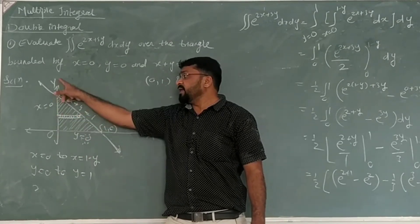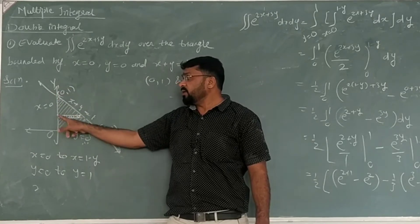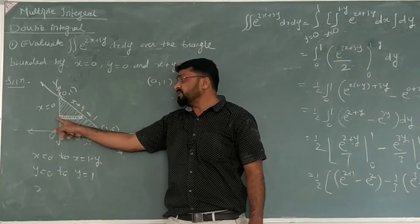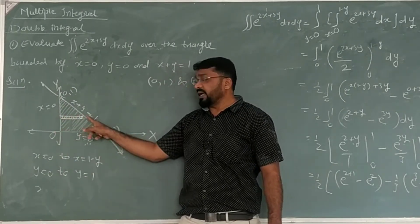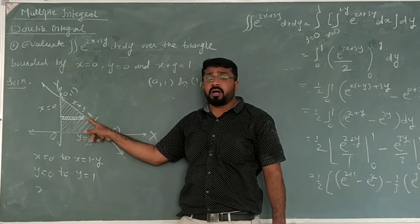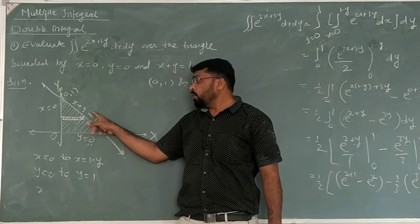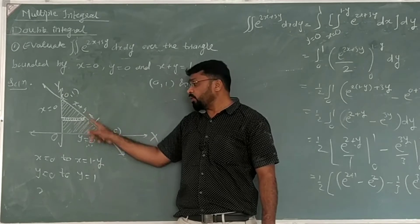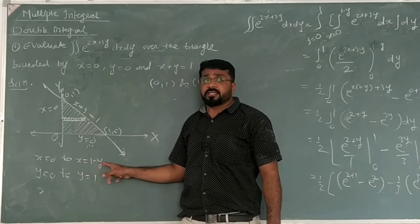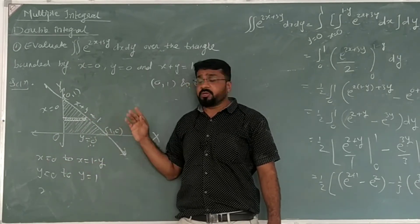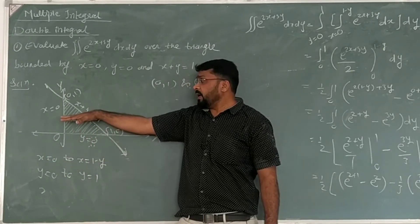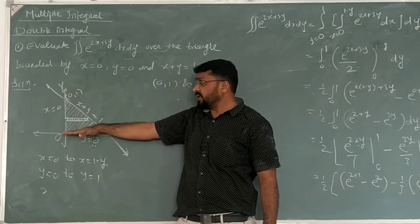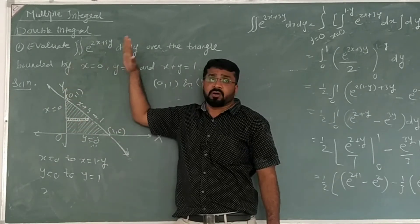For the horizontal strip, x starts at 0. And where does the strip go? It goes to the line, where x is 1 minus y. So x goes from 0 to 1 minus y — that is our x limit. Now this strip will slide through the region to cover the whole region.